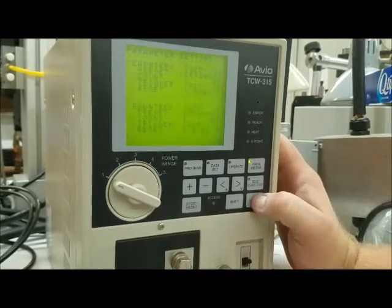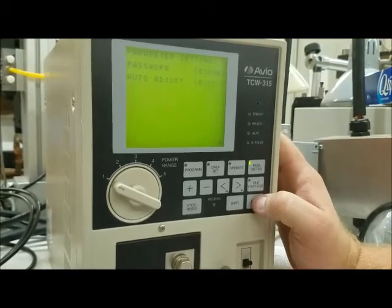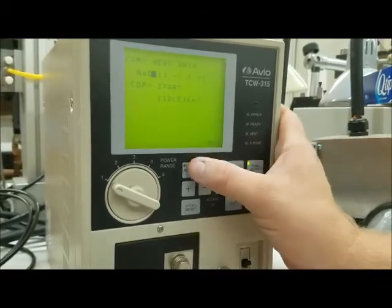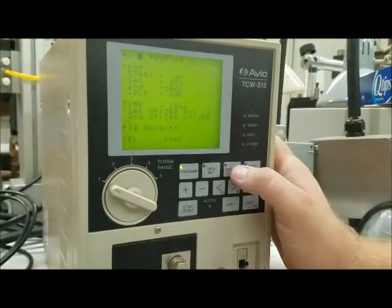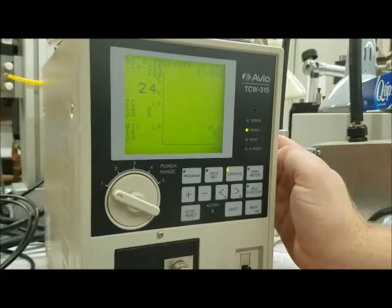There are some counters and other settings here, including a way to set a password. But that's basically it. To run whatever program you've selected, go to operate mode and you get a ready light when it's ready to run that program.